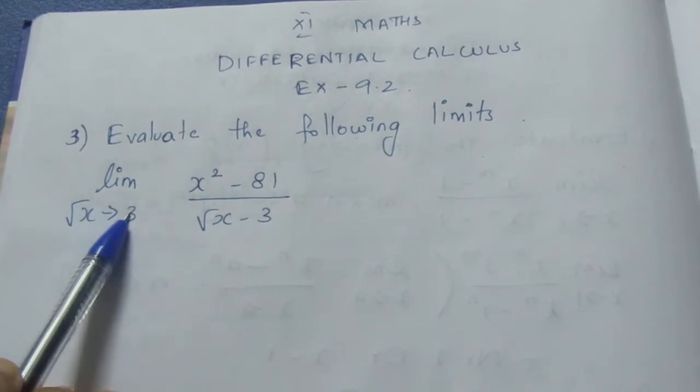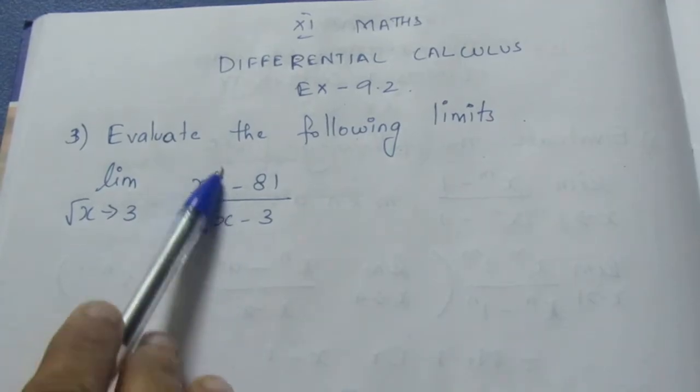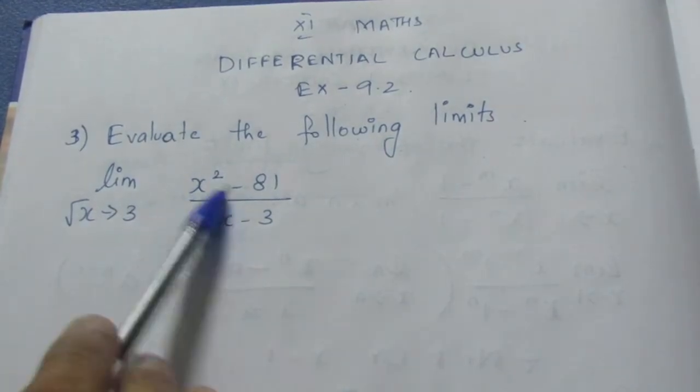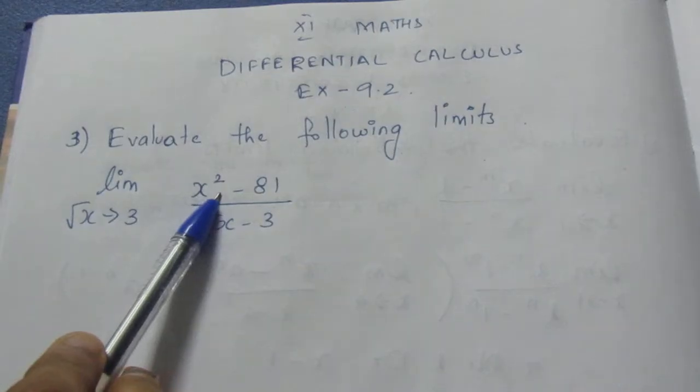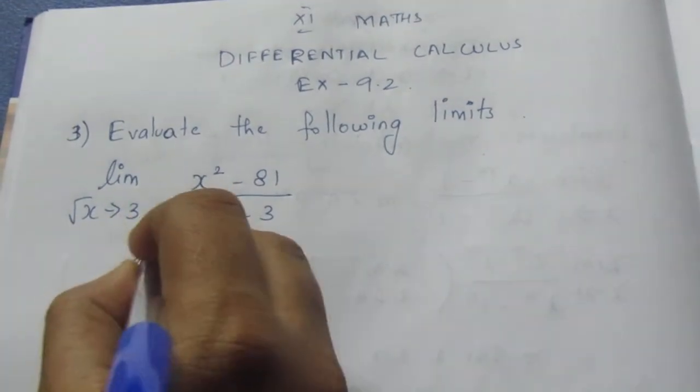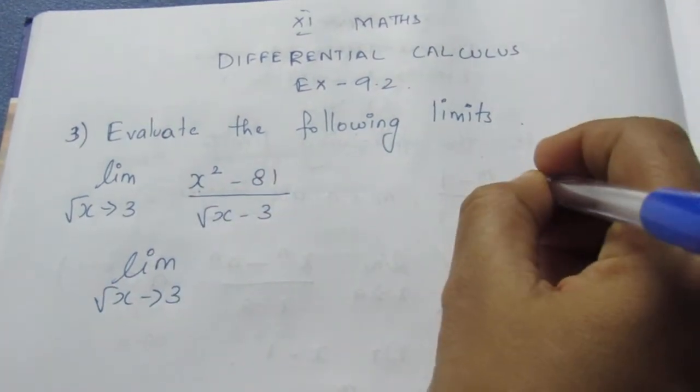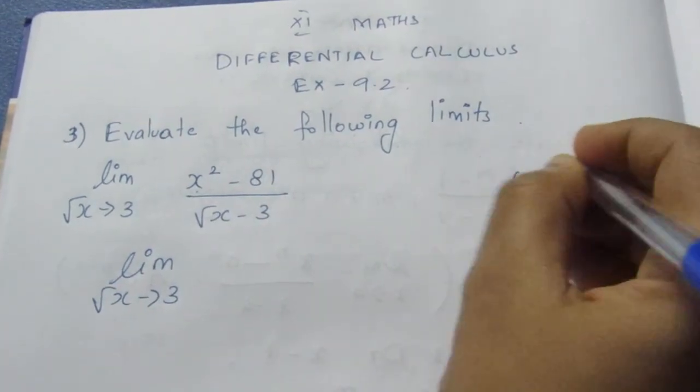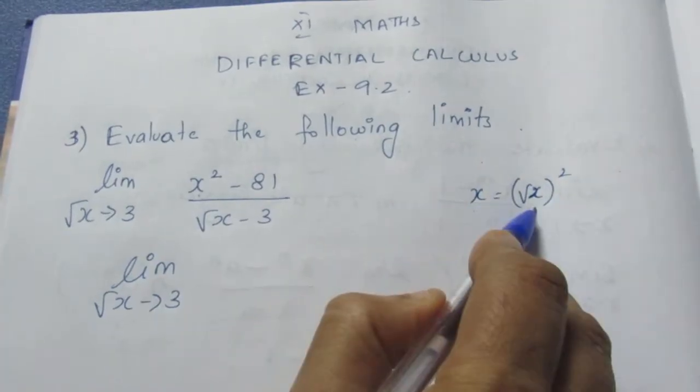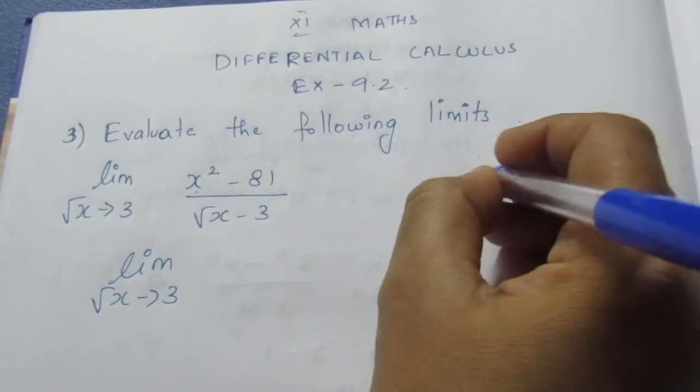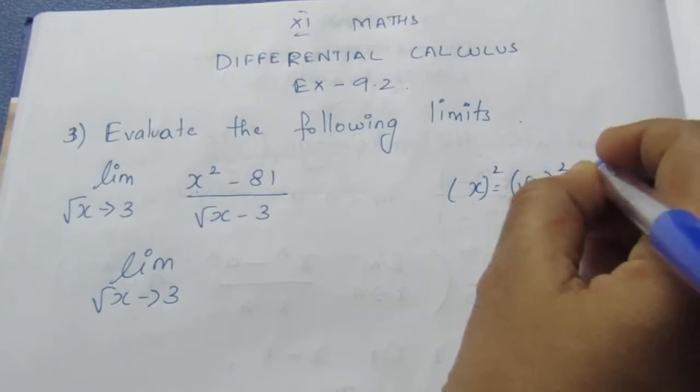Limit root x tends to 3. There is root x but there is no root x. We can't figure it out directly. How do we figure it out? If we square, we can solve it.